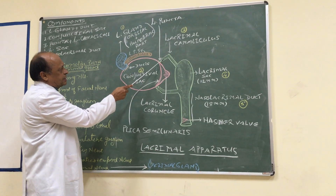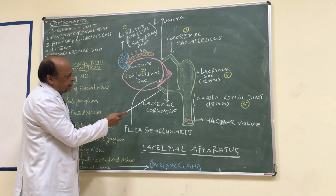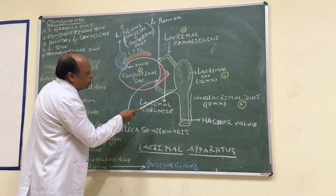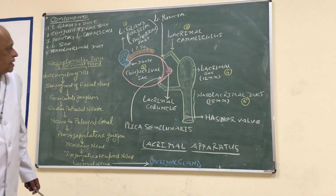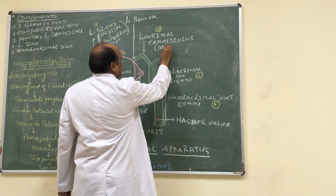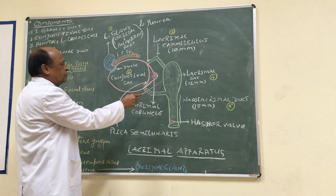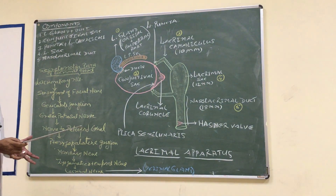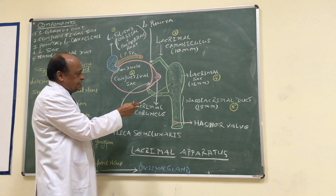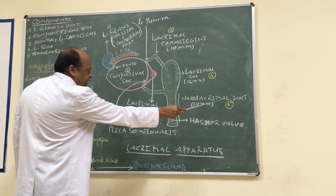The superior lacrimal canaliculus initially runs upwards and then downwards to join the lacrimal sac. Similarly, the inferior lacrimal canaliculus begins from the punctum, initially running downwards and then horizontally to open into the lacrimal sac. The length of the lacrimal canaliculi is approximately 10 mm. The lacrimal sac is a membranous sac situated in the lacrimal fossa of the orbit, formed by the lacrimal bone and the frontal process of the maxilla. The sac is about 12 mm in length and below it continues with the nasolacrimal duct.